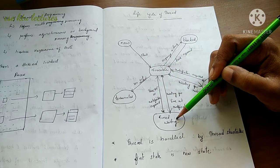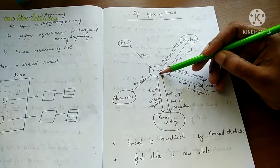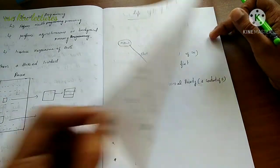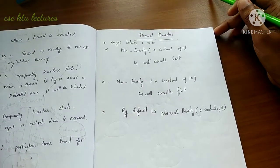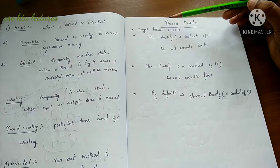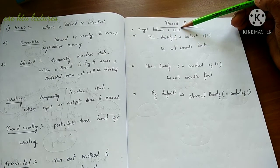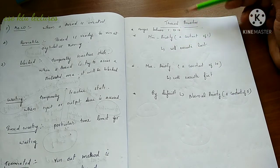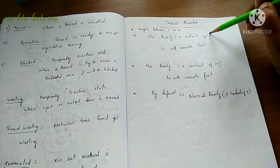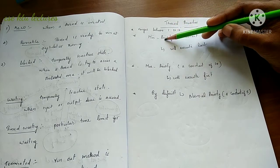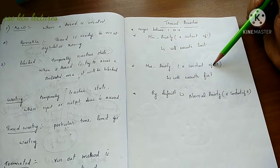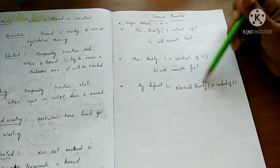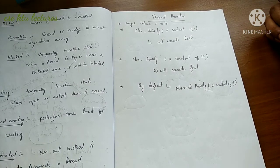That completes the life cycle of a thread. The next topic is thread priorities. Thread priorities range from 1 to 10. The minimum priority value is 1, and the maximum priority value is 10. A priority of 1 means the thread executes last; a priority of 10 means it executes first. By default, a thread is assigned normal priority, which is a constant value of 5.